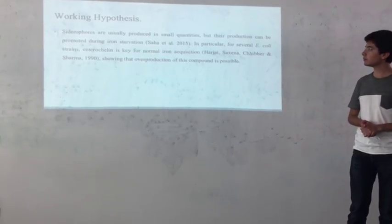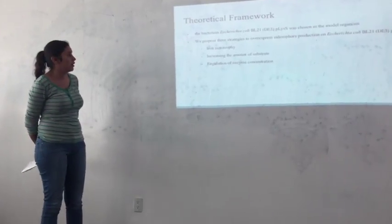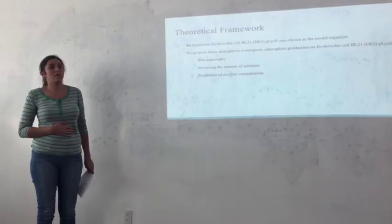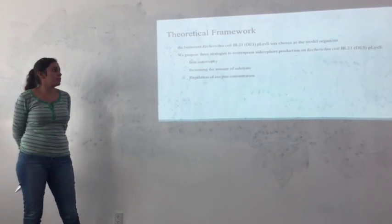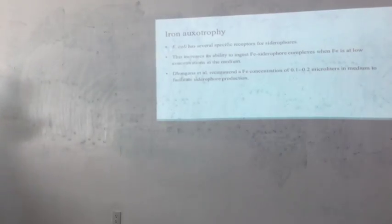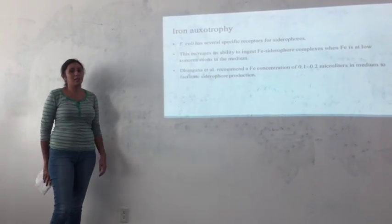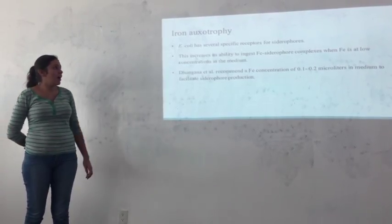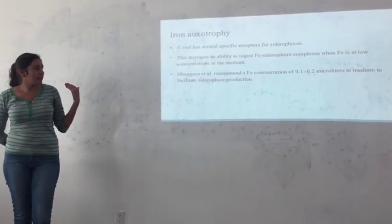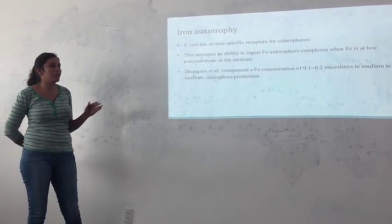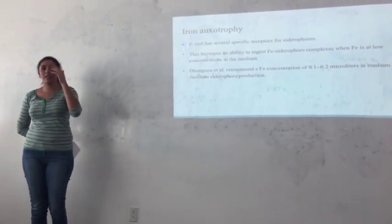As I said before, we propose three strategies to obtain the industrial production of siderophores: iron auxotrophy, increasing the amount of substrate, and regulation of enzyme concentration. E. coli has several specific receptors for siderophores, and this increases the ability to ingest iron-siderophore complexes. In the literature we found that a recommended iron concentration in the medium is 0.1 to 2.2 micromolar to facilitate siderophore production.